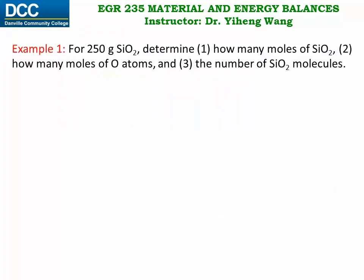Let's look at this example problem. If we have 250 grams of silicon dioxide, we need to determine first, how many moles of silicon dioxide are there; second, how many moles of oxygen atoms are there; and third, the number of silicon dioxide molecules.